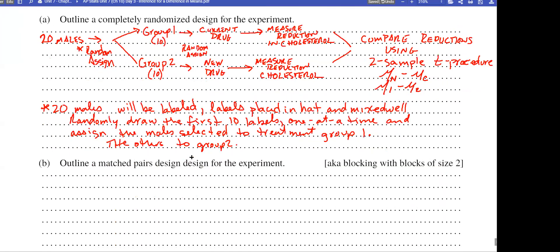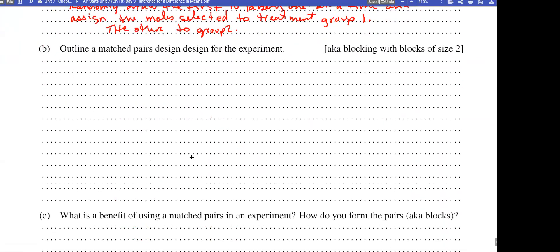Next, if we wanted to outline a matched pairs design, here's what we would have. For a matched pairs design, we're still going to have our 20 males for this cholesterol study. In our matched pairs design, we're going to have pair one, pair two, and so on all the way down to pair 10. Each pair will have two people, giving us our 20 subjects.